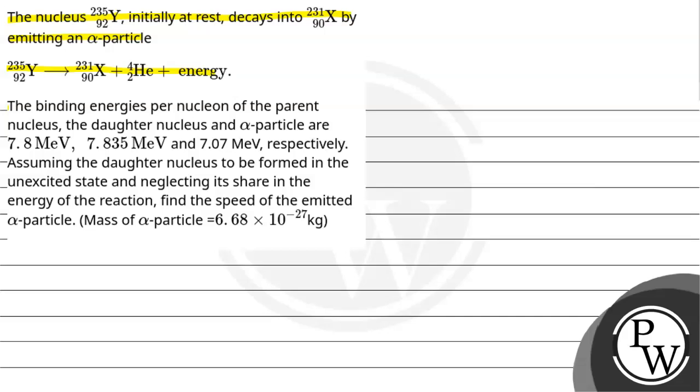The binding energy per nucleon of the parent nucleus, the daughter nucleus, and the alpha particle are 7.8 MeV, 7.835 MeV, and 7.07 MeV respectively. Assuming the daughter nucleus to be formed in the unexcited state and neglecting its share in the energy of the reaction, find the speed of the emitted alpha particle. Mass of alpha particle is 6.68 × 10^-27 kg.